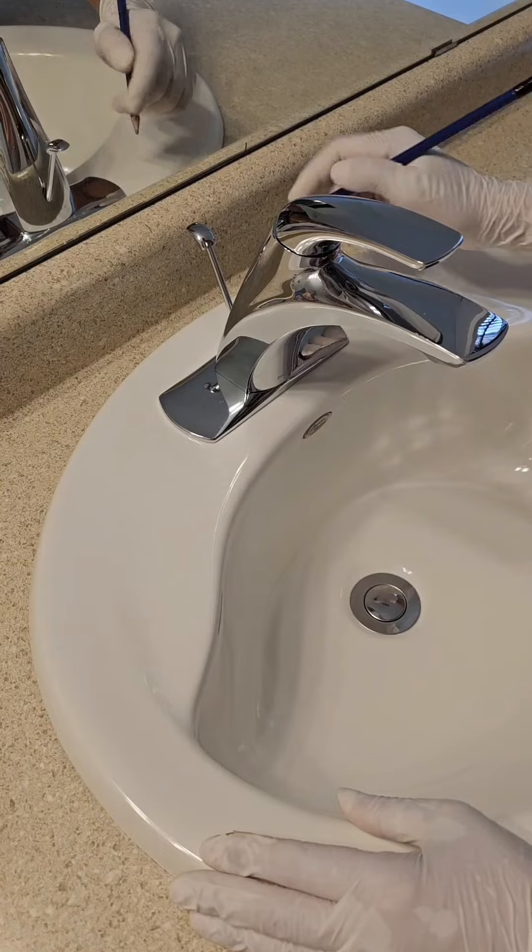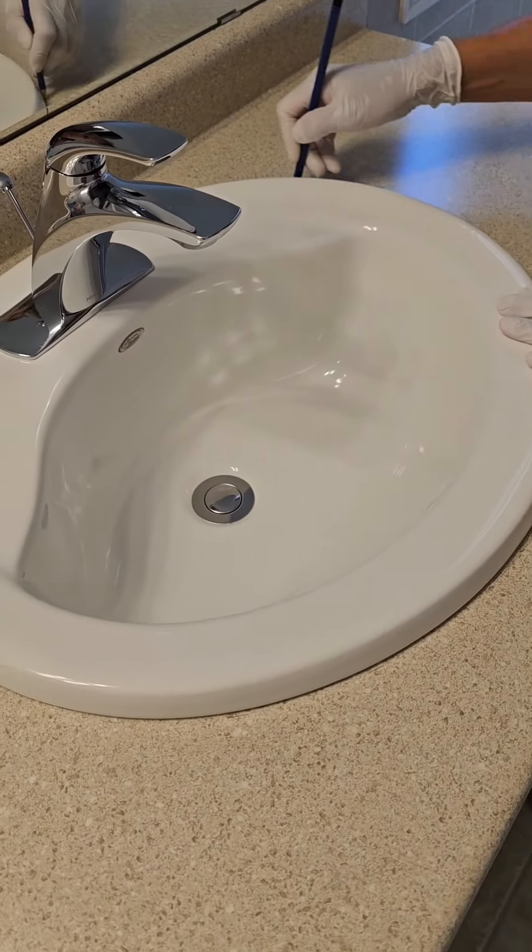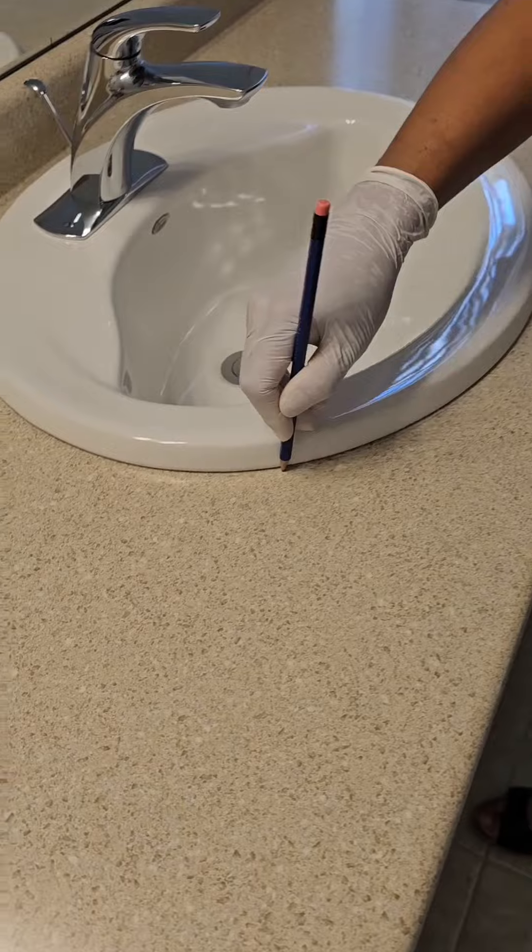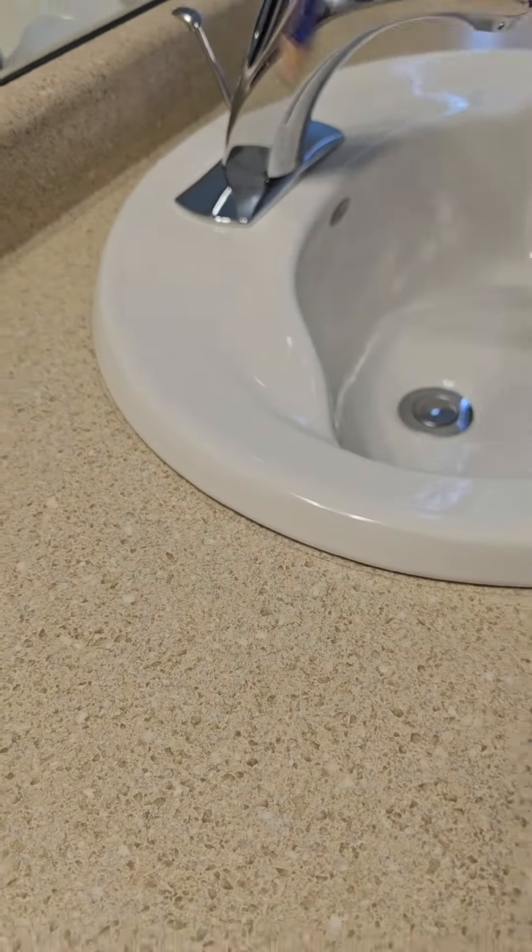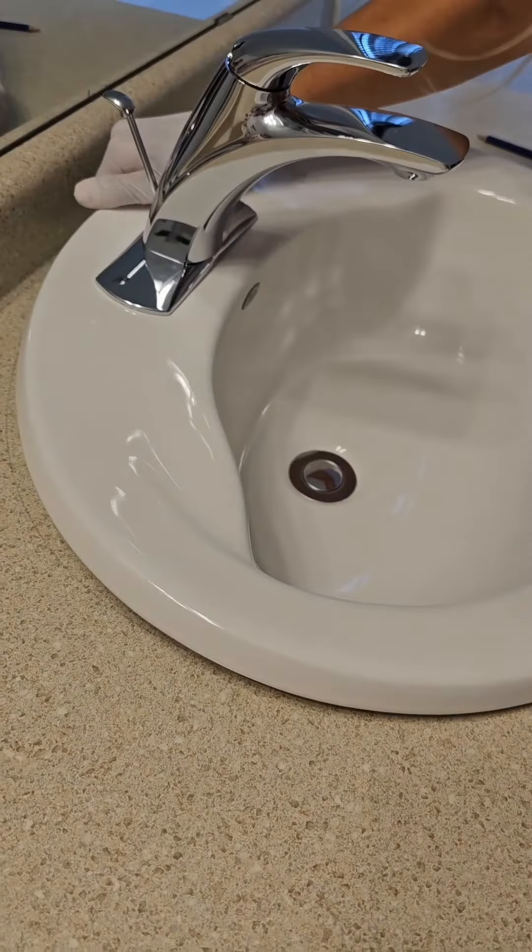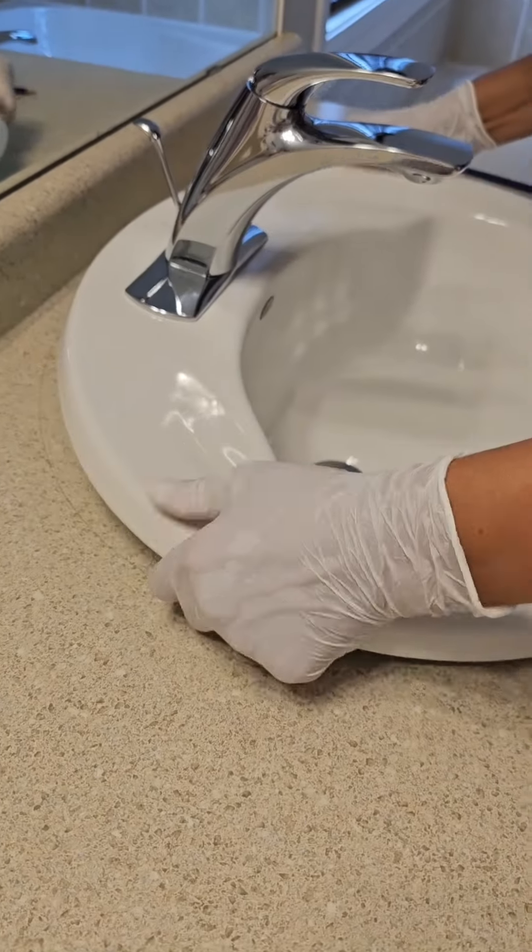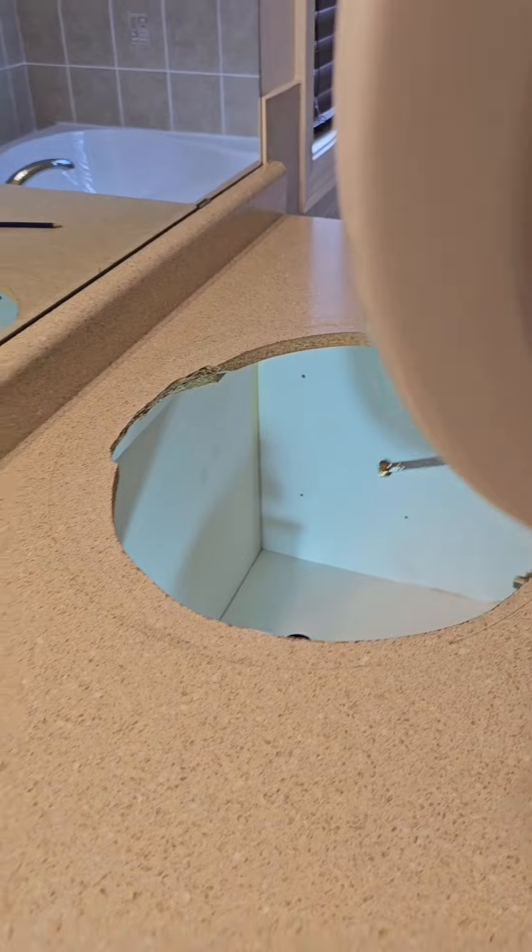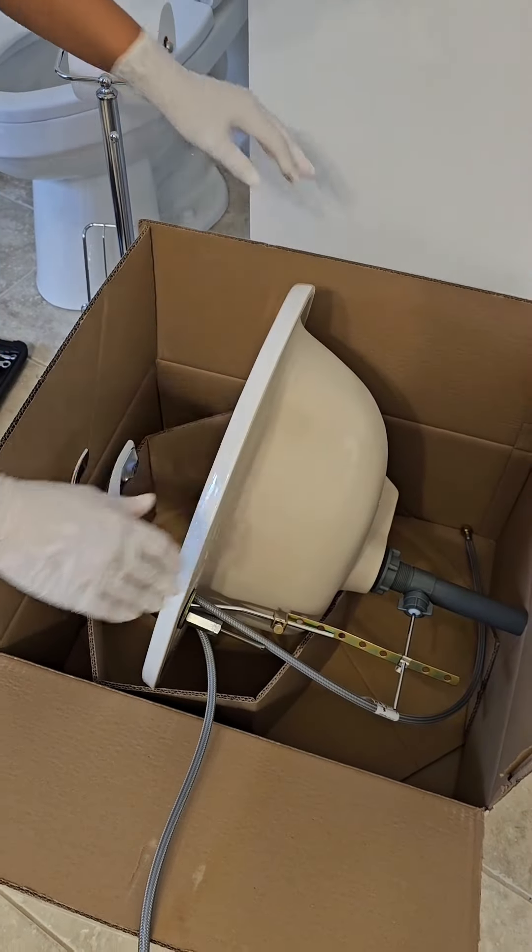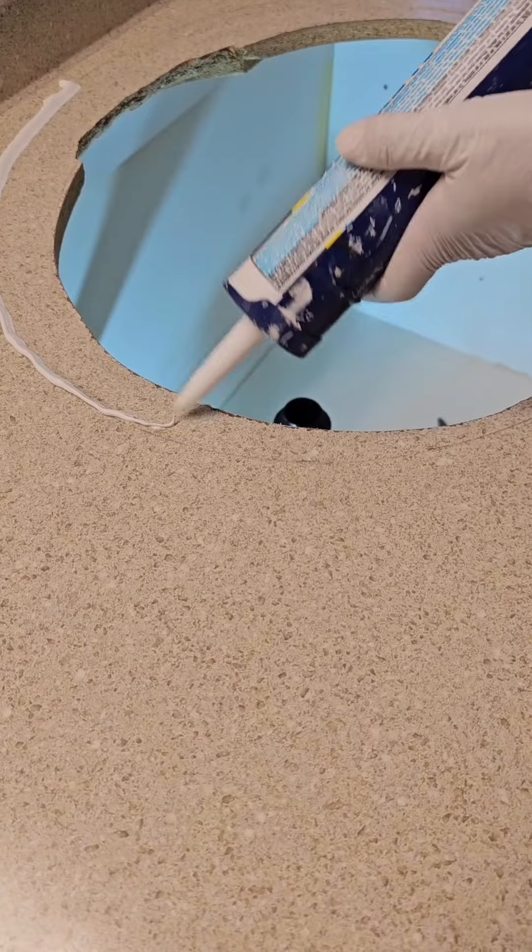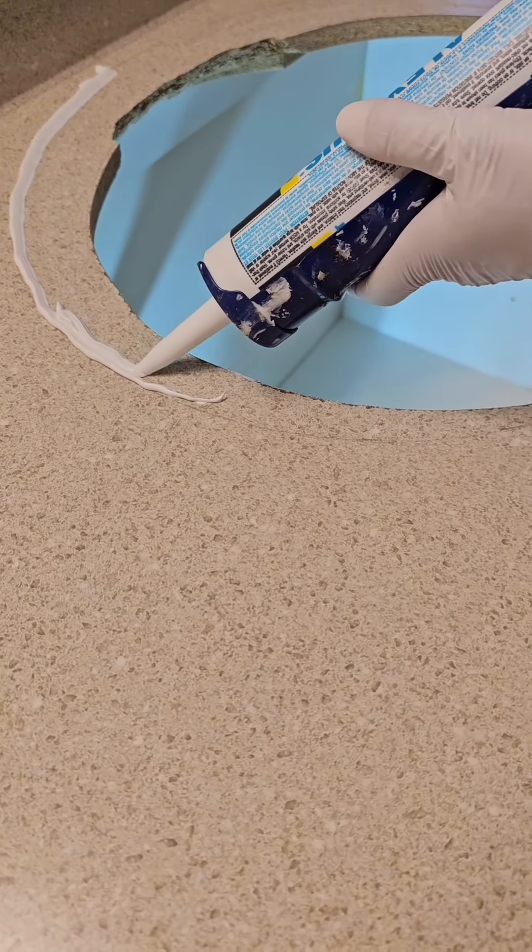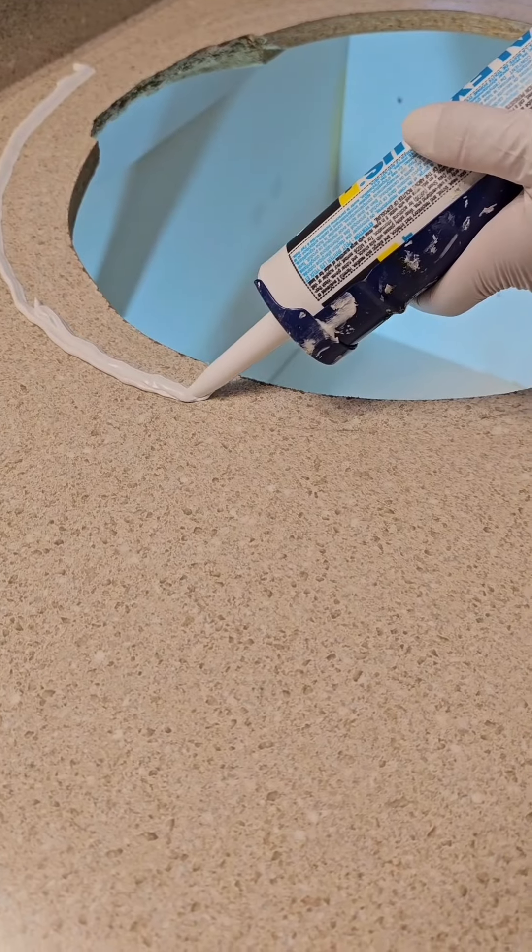Using a pencil, trace the outside of the sink. Ensure the pencil is perpendicular to the counter all around. Lift the sink out carefully and keep it sideways in the box for now. Bead a line of sealer directly inside and on the pencil mark. Try to be precise.